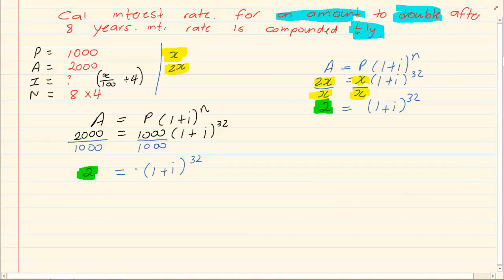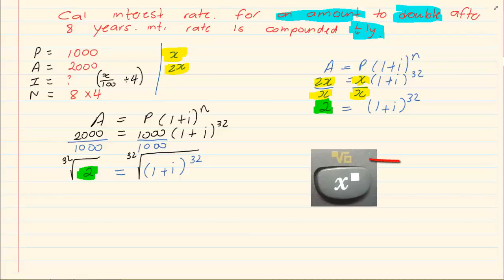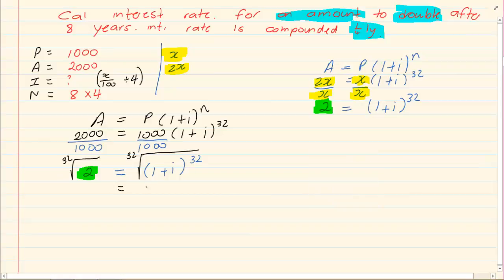Now how do I get rid of the 32? I'm going to 32 root it. Use your calculator. There's a specific feature on your calculator that would give you this. It's a root sign with two squares. It's a shift. You're going to use the shift button to make use of this feature. So we're going to have 1 plus I is going to equal to 1.021897.